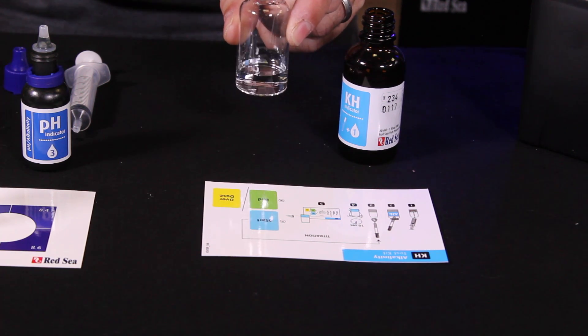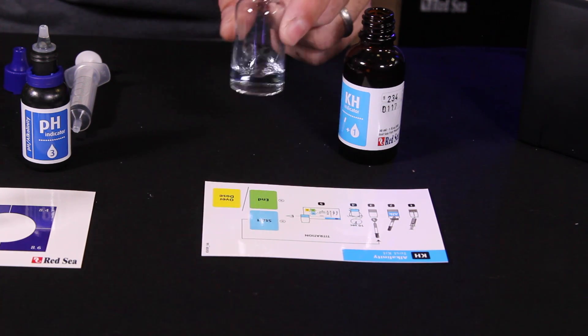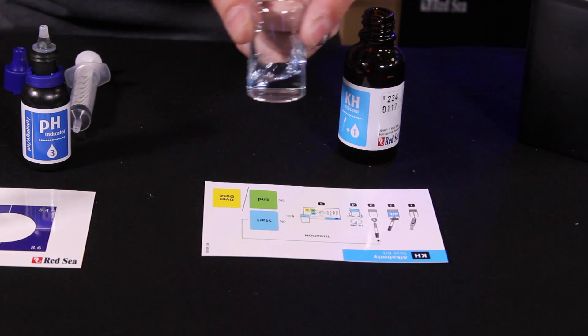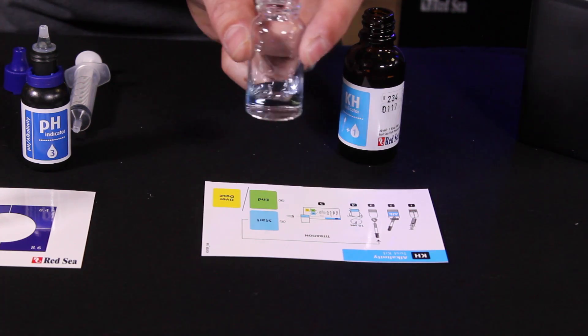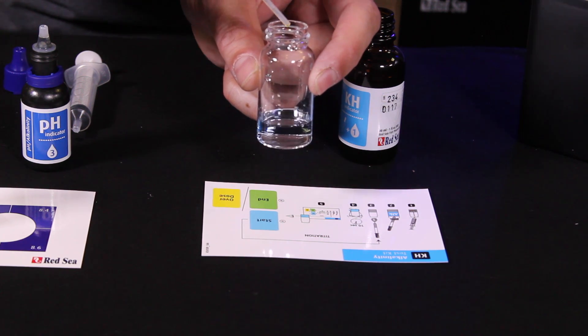Then we're going to swirl. And it helps to hold against the white background like this card so I can actually see the color. We're looking for a color change from blue to green.